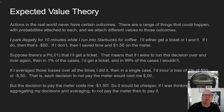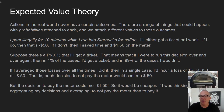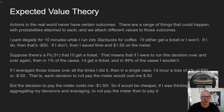But the decision to pay the meter costs $1.50 each time. So it would be cheaper, if thinking about aggregating decisions, to not pay the meter rather than to pay it. Not paying costs 50 cents on average per instance, whereas paying costs $1.50 each time. So it looks like if we're just trying to maximize utility and optimize the dollars in my pocket, the rational thing to do — the best thing to do — is to cheat the meter in this kind of case.